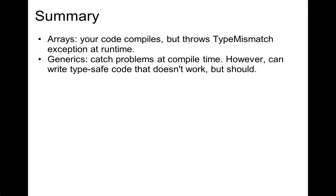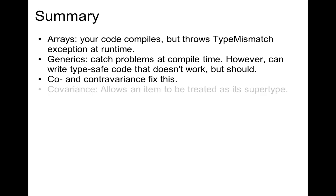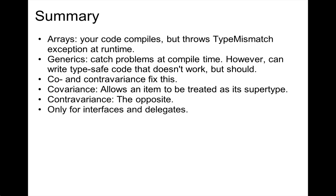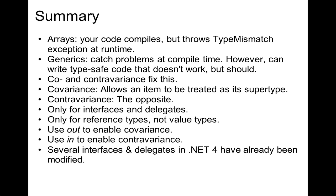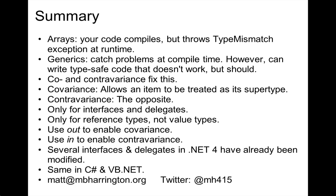That's when the Anders quote becomes relevant. Co- and contravariance fix this problem. Covariance allows an item to be treated as its supertype; contravariance is the opposite. It's only for interfaces and delegates, and only for reference types, not value types. You use the `out` parameter modifier to enable covariance, and `in` to enable contravariance. Several interfaces and delegates in .NET 4 have already been modified to support both. You'll see the same behavior in C# and VB.NET due to language parity. Feel free to email me or follow me on Twitter. Thank you for watching.